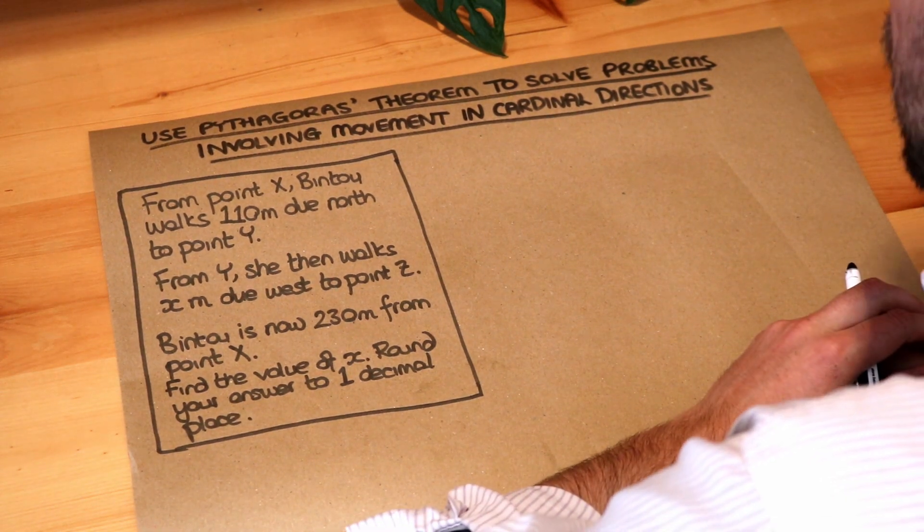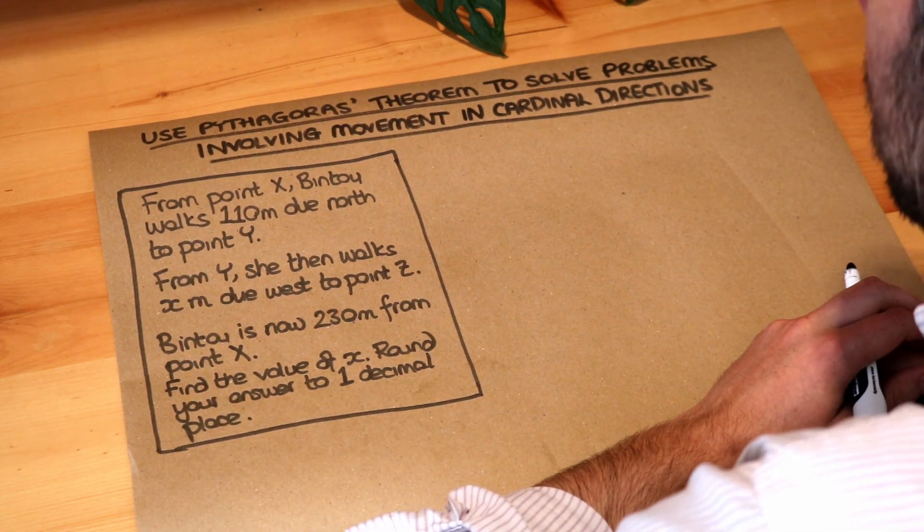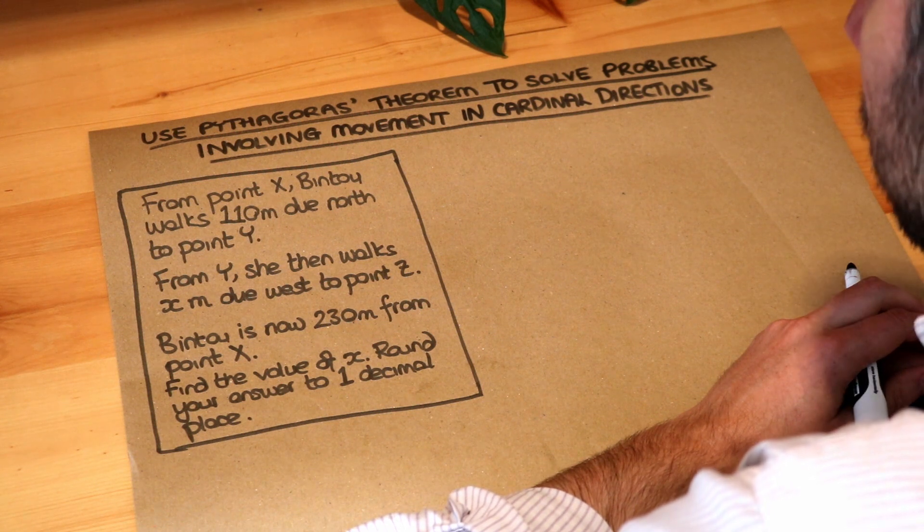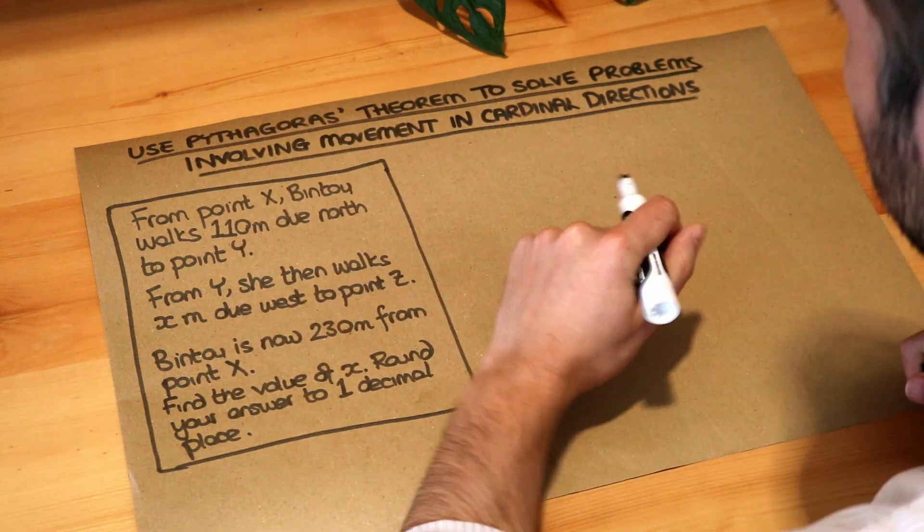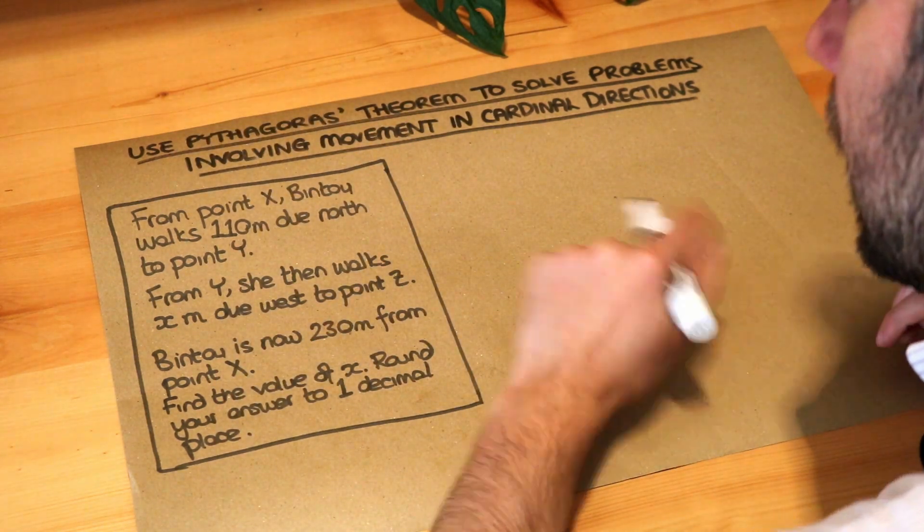Hello and welcome to this Dr Foss video on using Pythagoras theorem to solve problems involving movement in cardinal directions. By cardinal directions we just mean east, north, south, west - directions on a compass. Let's read the question.